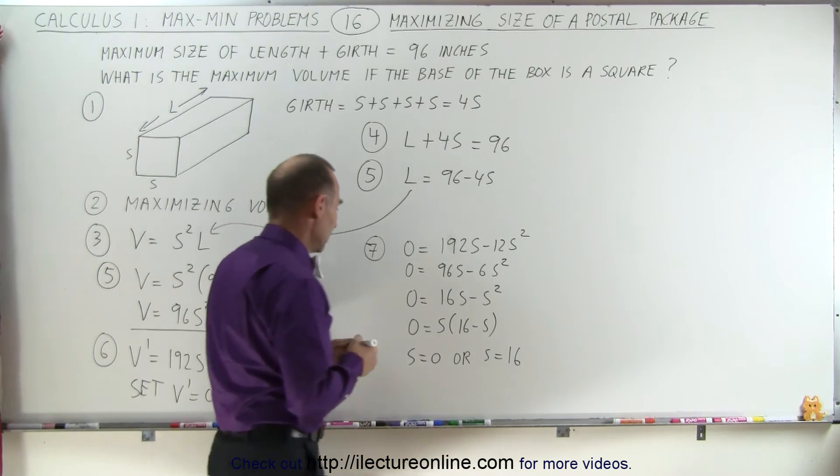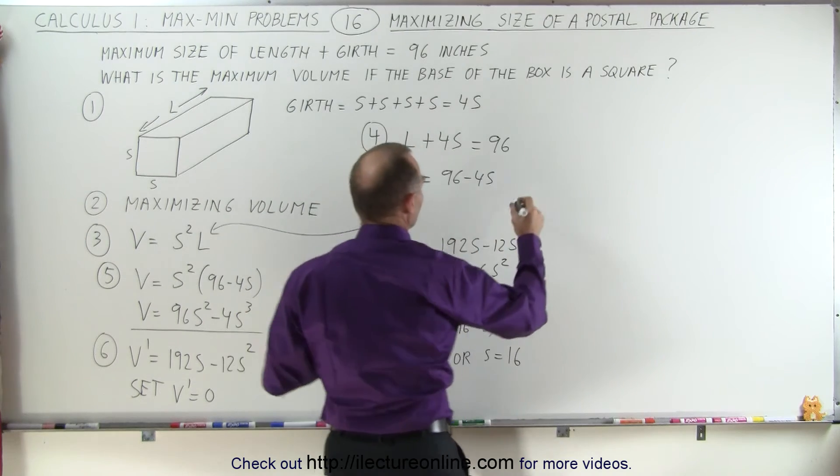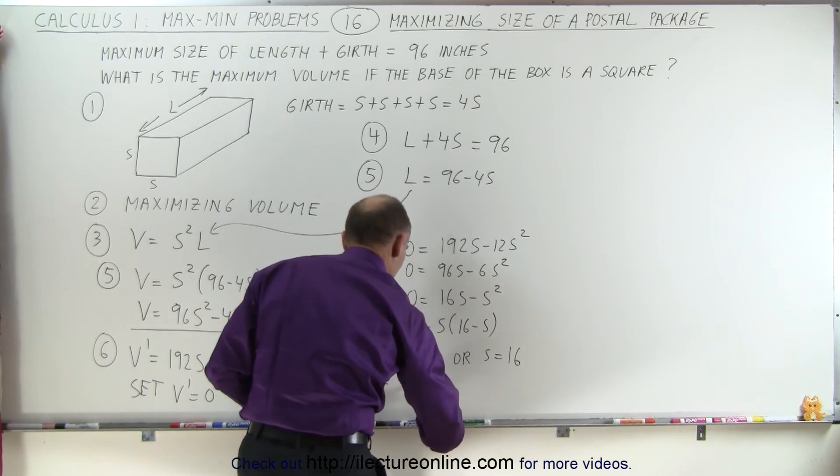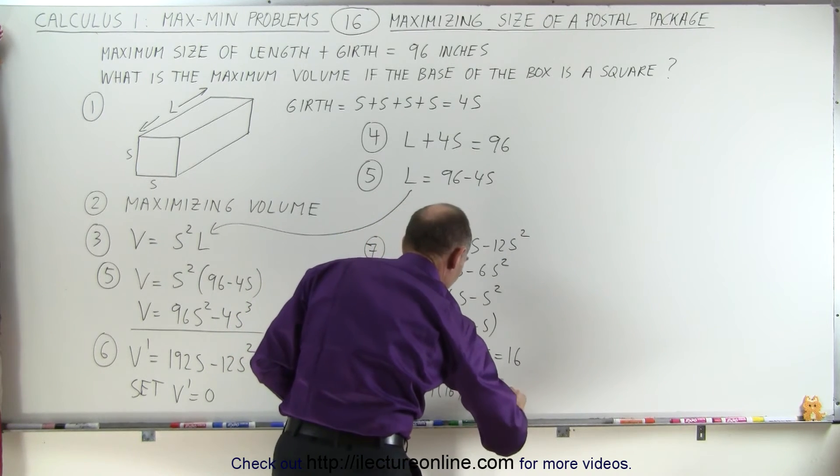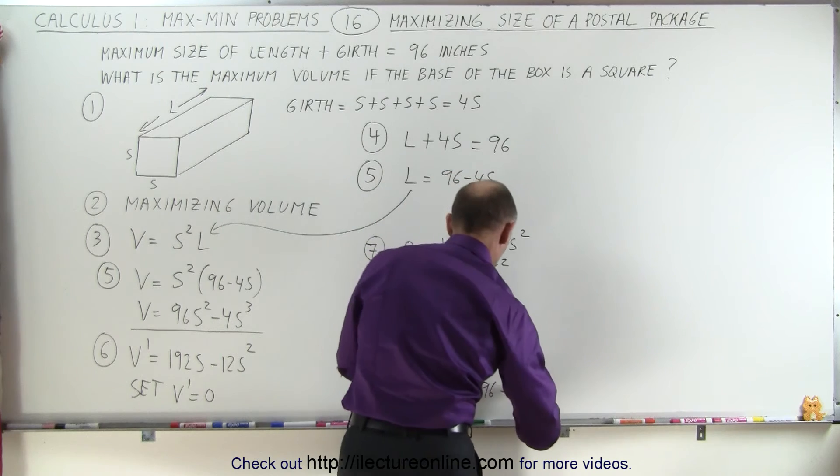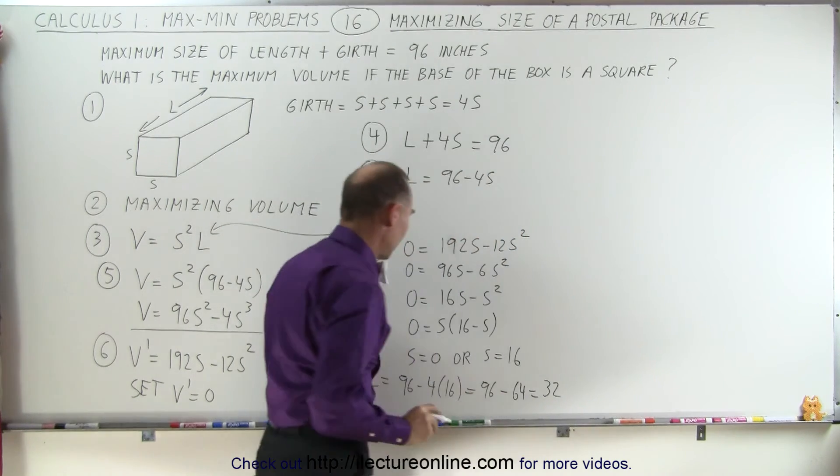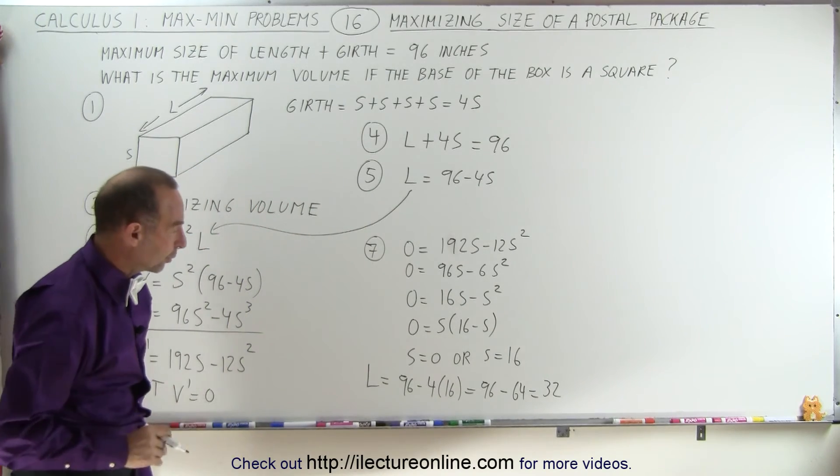Let's find what L equals. L = 96 - 4(16) = 96 - 64 = 32. So we have a side of 16 inches and a length of 32 inches.